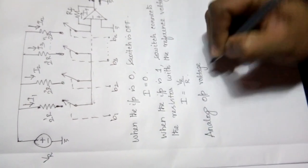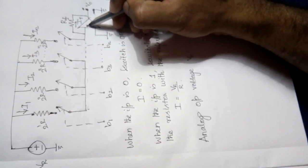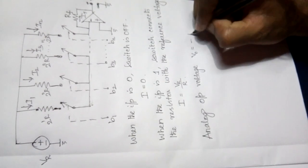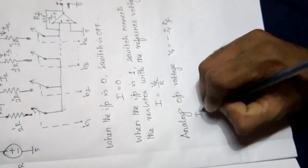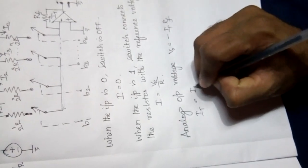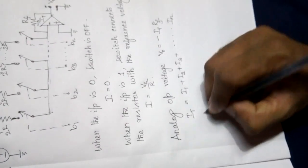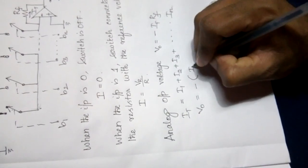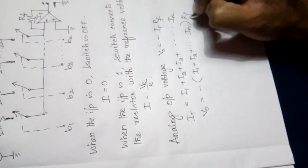The analog output voltage V0 is equal to: since we are giving the input to the inverting terminal, we get the output as minus IT multiplied by RF. IT is the total current, which equals I1 + I2 + I3 + ... + IN. So V0 = −(I1 + I2 + ... + IN) × RF.